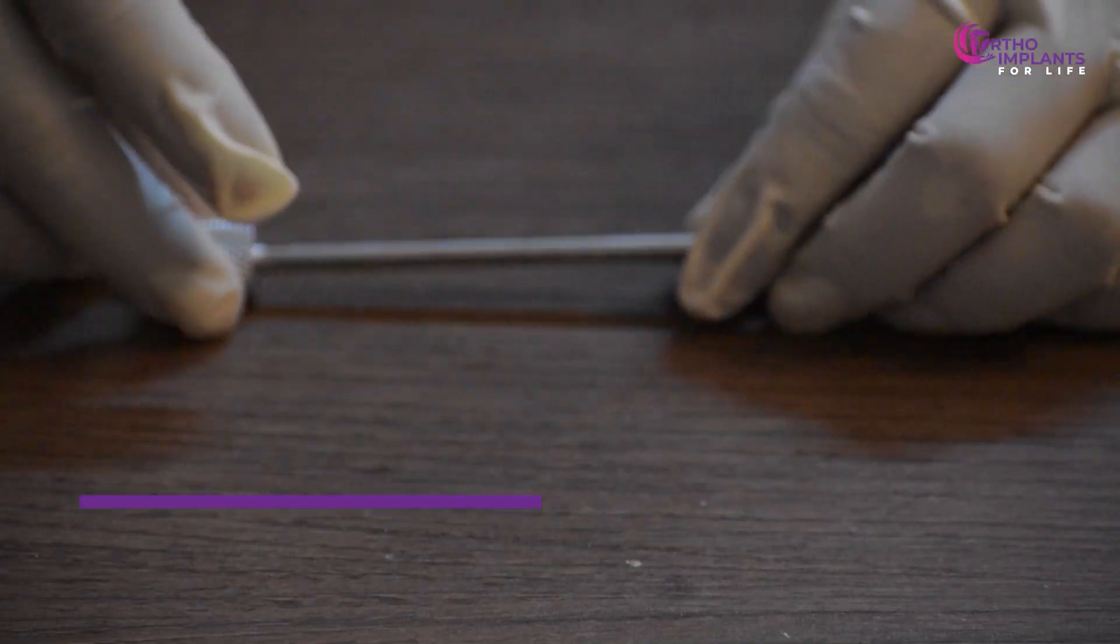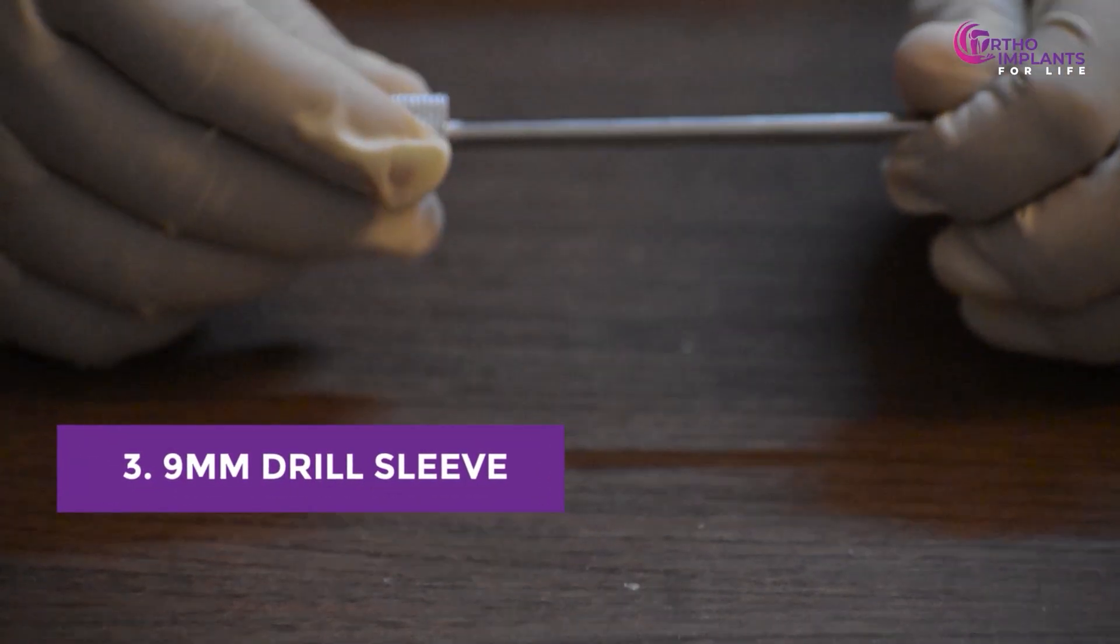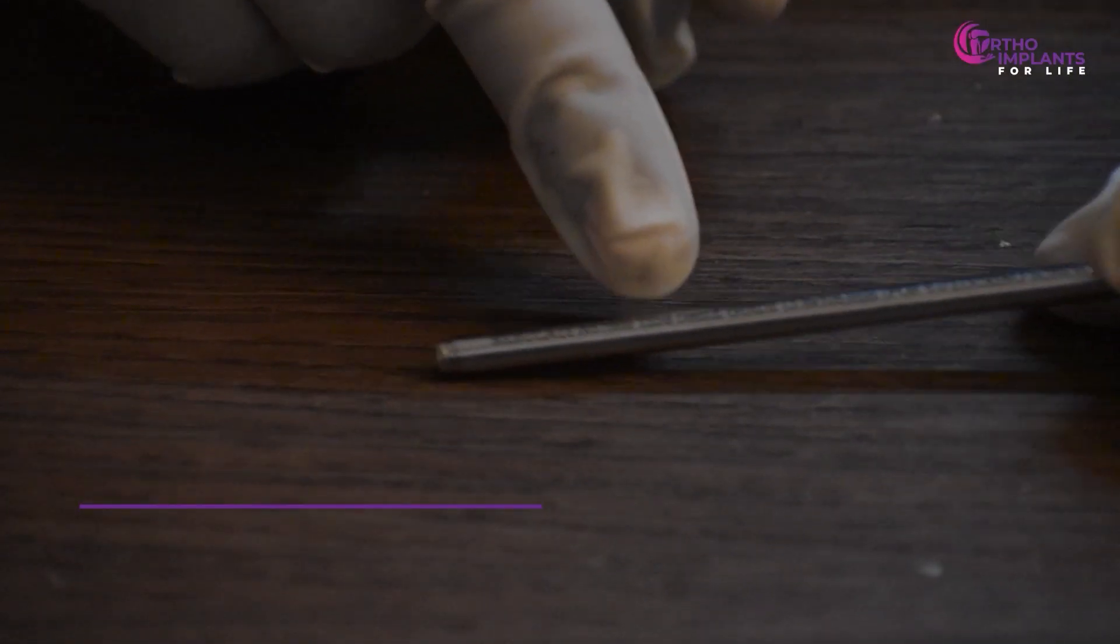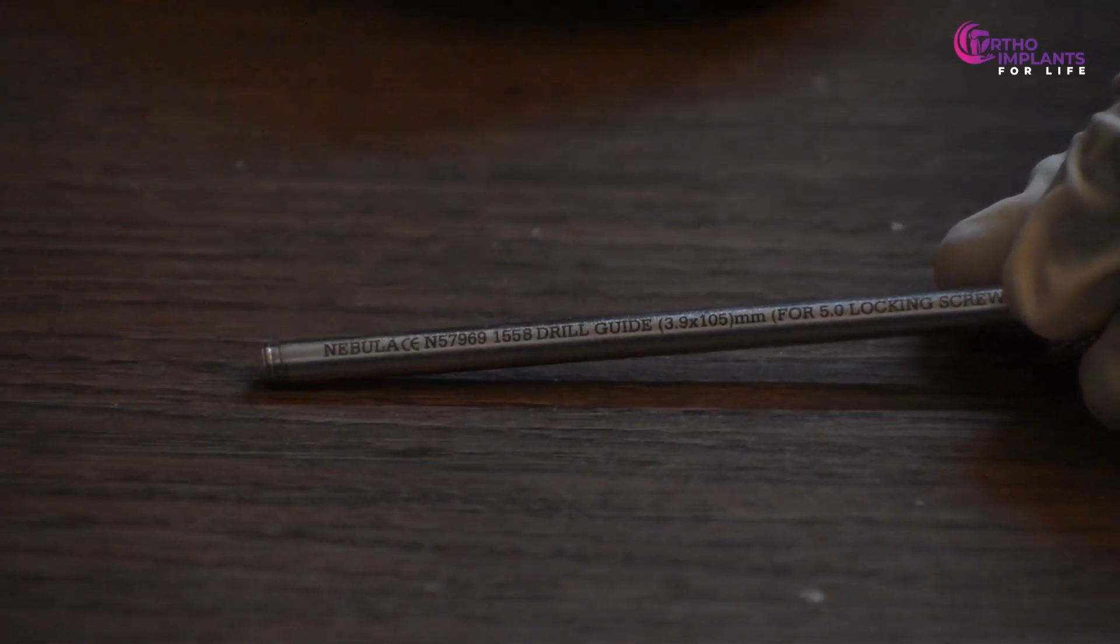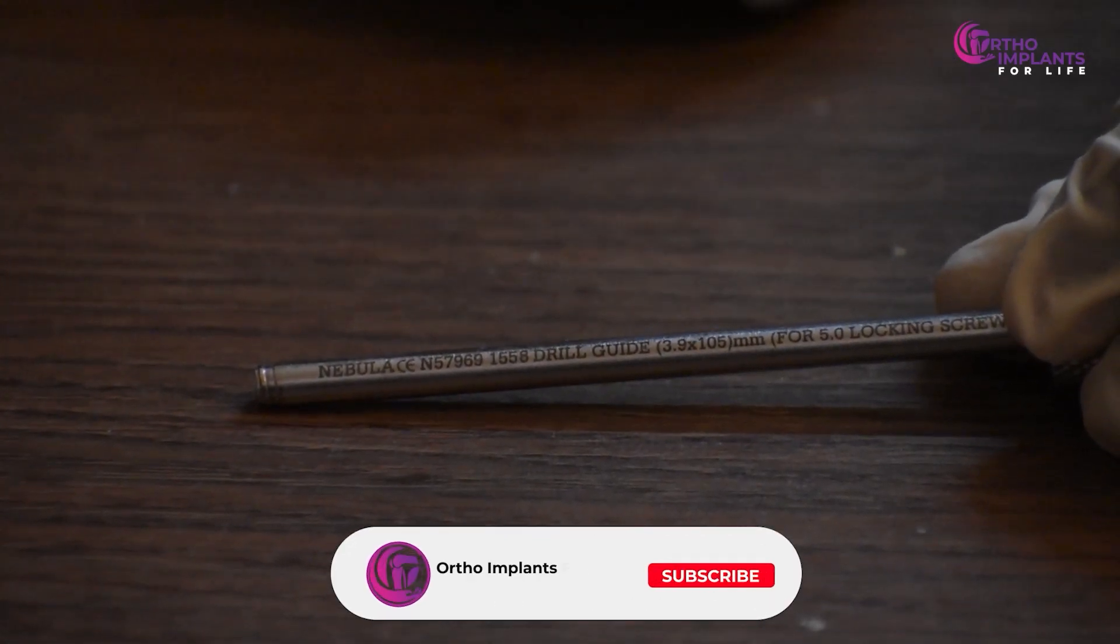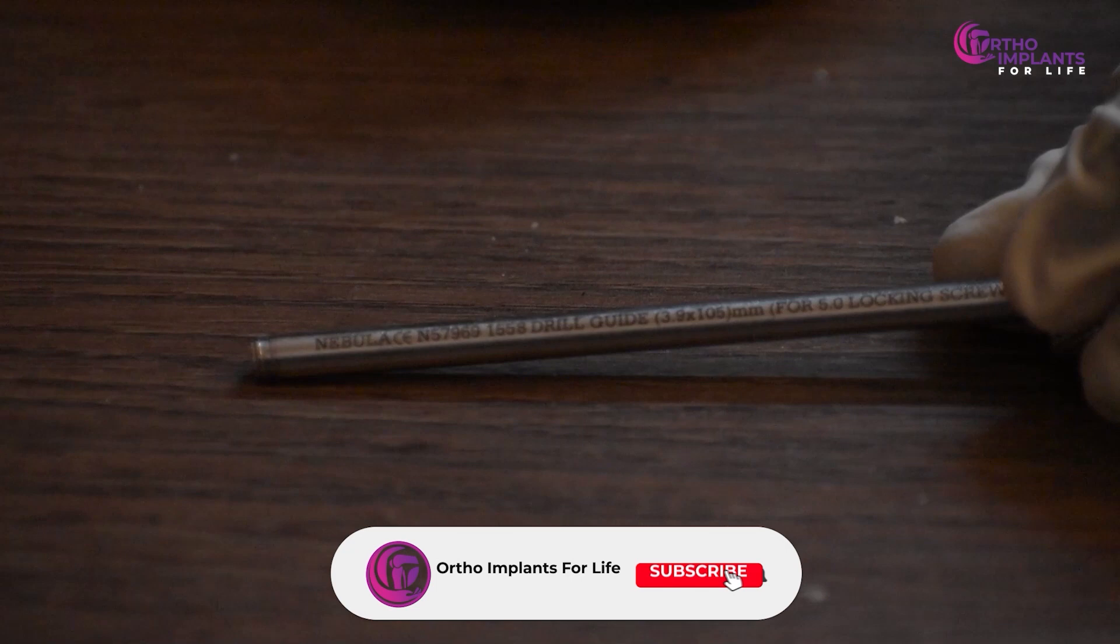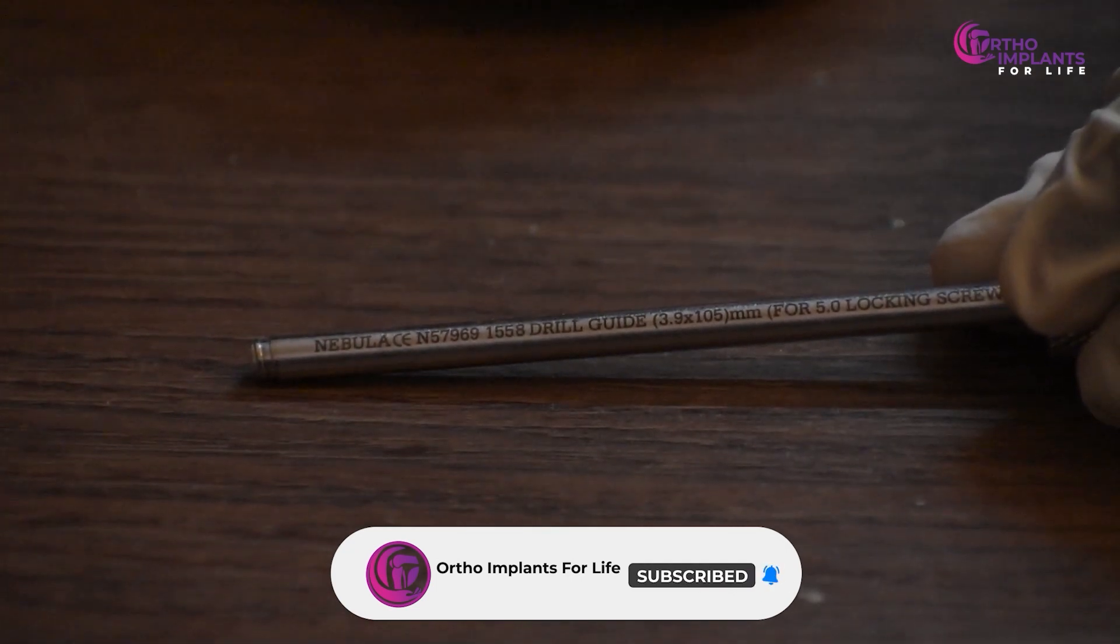Next is the 3.9 mm drill sleeve, which is used for the 5 mm locking screw. Followed by the 3.2 mm drill bit, which is designed for the 4.5 mm cortical screws.